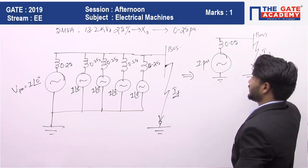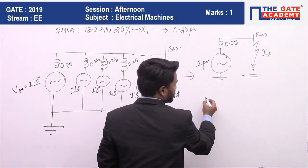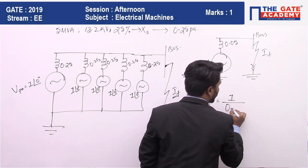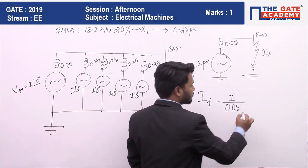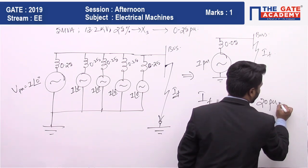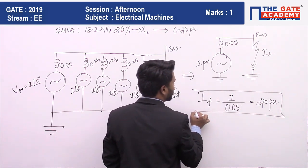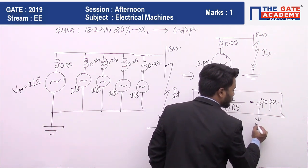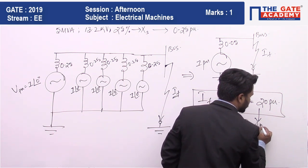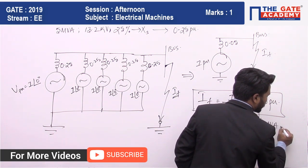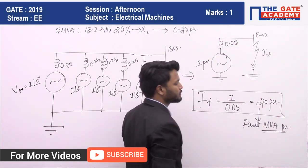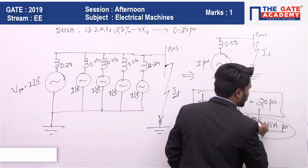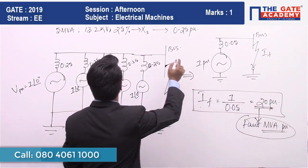The fault current I_f equals one per unit divided by 0.05, which gives 20 per unit. The fault current in per unit equals the fault MVA in per unit — this is a standard relation: fault current per unit is equal to fault MVA per unit.